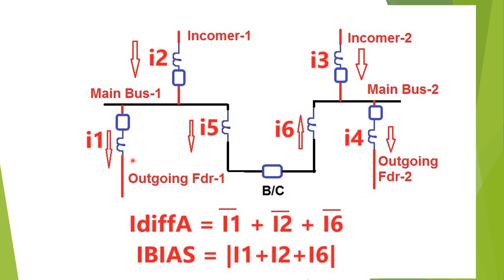The differential current has been shown for the bus bar relay for the two main bus system. The current for incomer one and incomer two is i2 and i3, and outgoing feeder one and outgoing feeder two is i1 and i4. Since i4 is greater than i3, the remaining current flows from main bus one towards main bus two, with i5 equal to i6 equal to i4 minus i3. The differential current for zone A, i_diff_A, is the vector sum of i1 (outgoing feeder one), i2 (incomer one), and i6 (CT on the main bus two side). The bias current is the scalar sum i1 + i2 + i6.